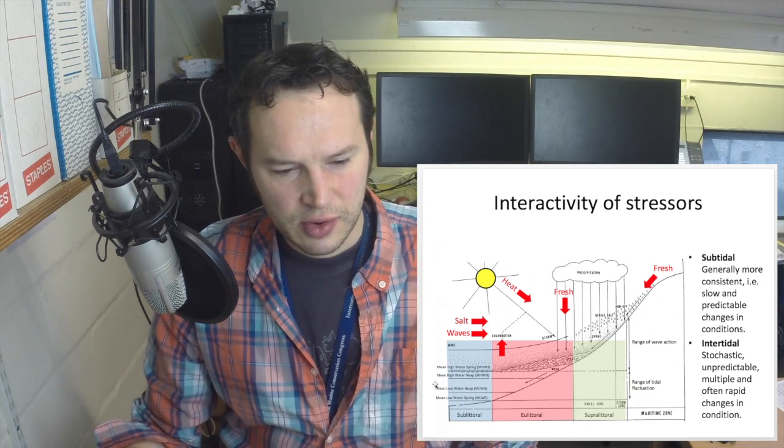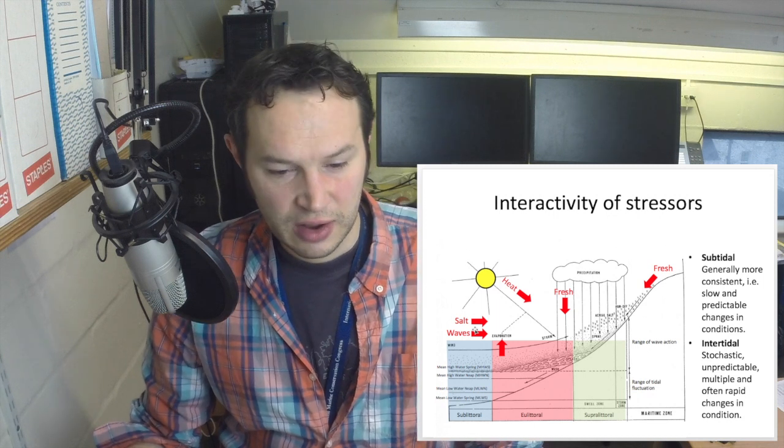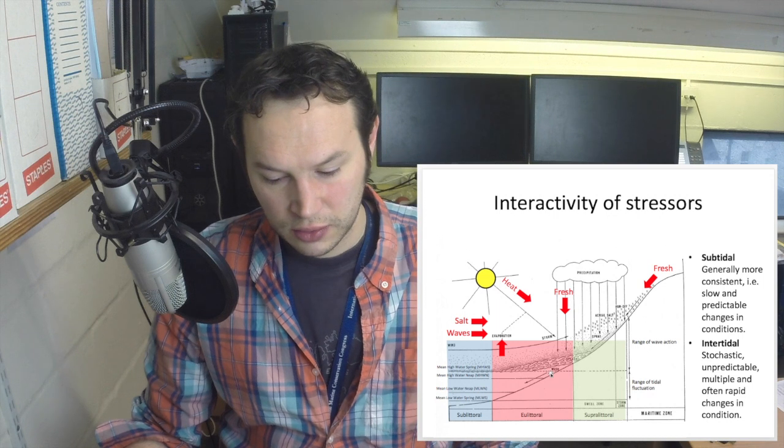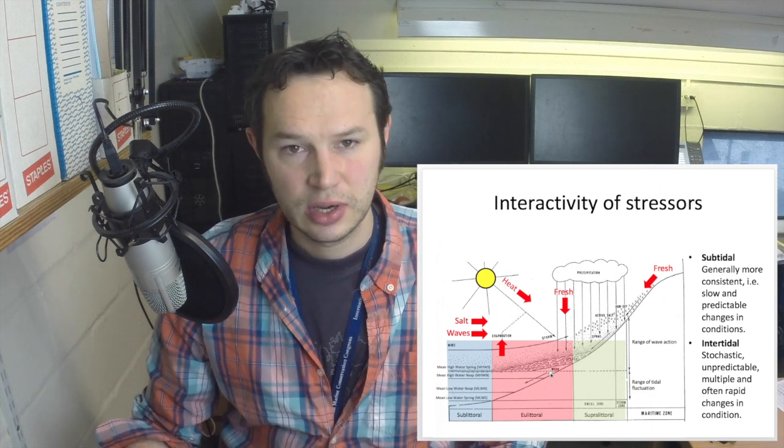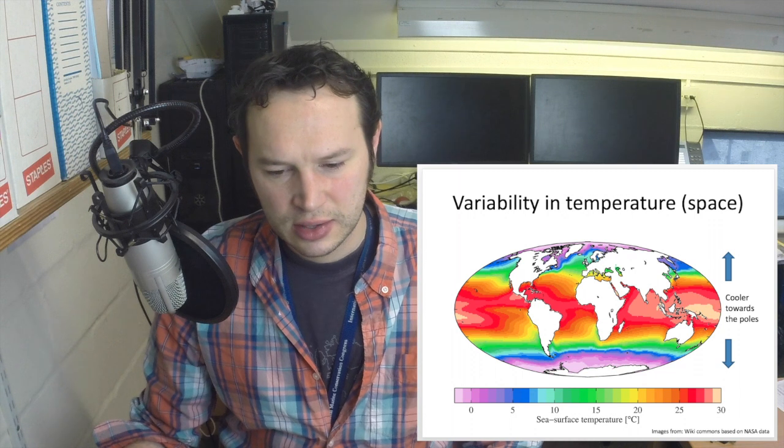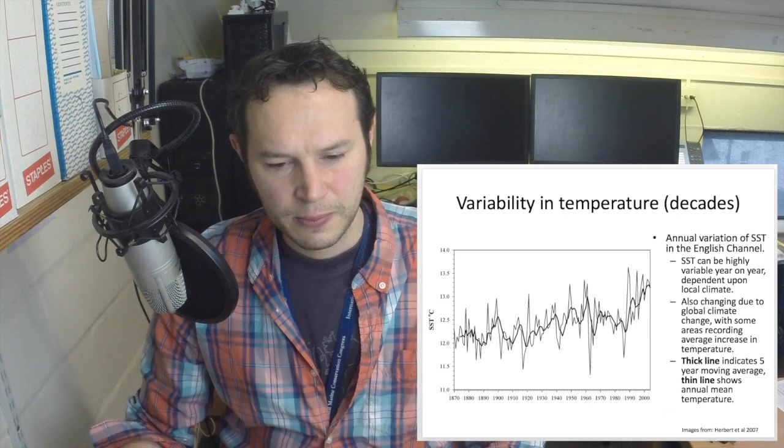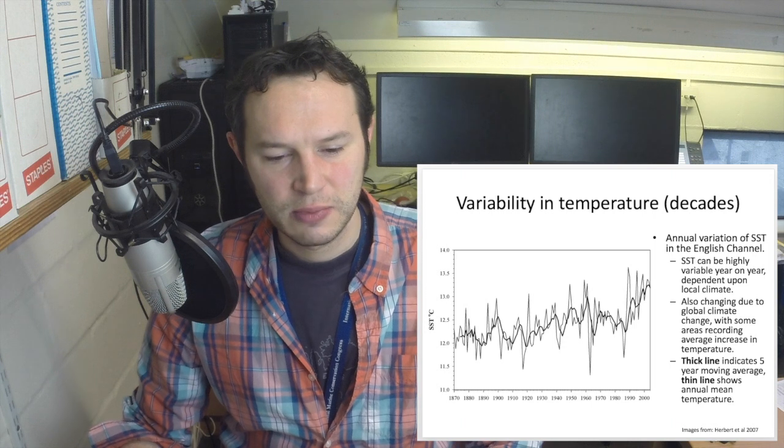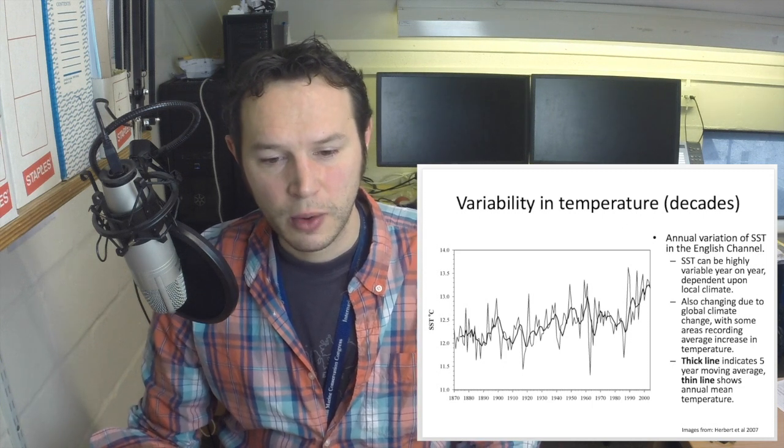The subtidal, which is this area here in blue, is generally much more consistent with its conditions. Temperature and salinity fluctuate very, very little. When we look at the eulittoral, the intertidal zone, the changes there can be a lot more random, a lot more stochastic, unpredictable, and often very rapid with respect to change. We know clearly that temperatures get cooler towards the poles. That means over large latitudinal gradients, seaweeds have developed adaptations that allow them to live in these different regions. Temperature can fluctuate on annual variability over time as well as increasing with warming trends. So species must be able to deal with not only the spatial component of temperature, but also the temporal component of temperature fluctuation.